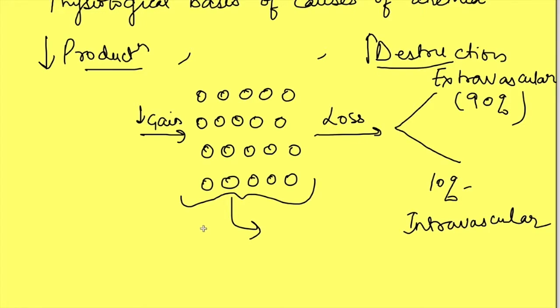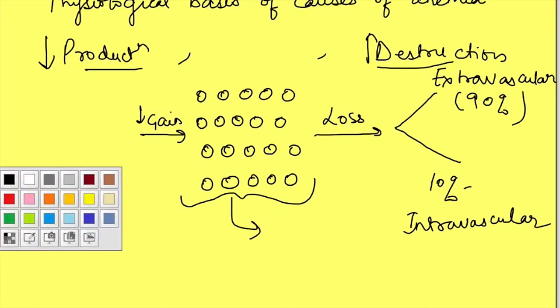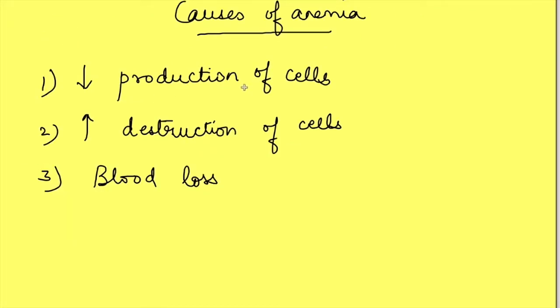Now let's go into details of each of these causes. What are these causes? Either there is decreased production of cells or increased destruction of cells or there can be blood loss. Now let us consider decreased production of cells.